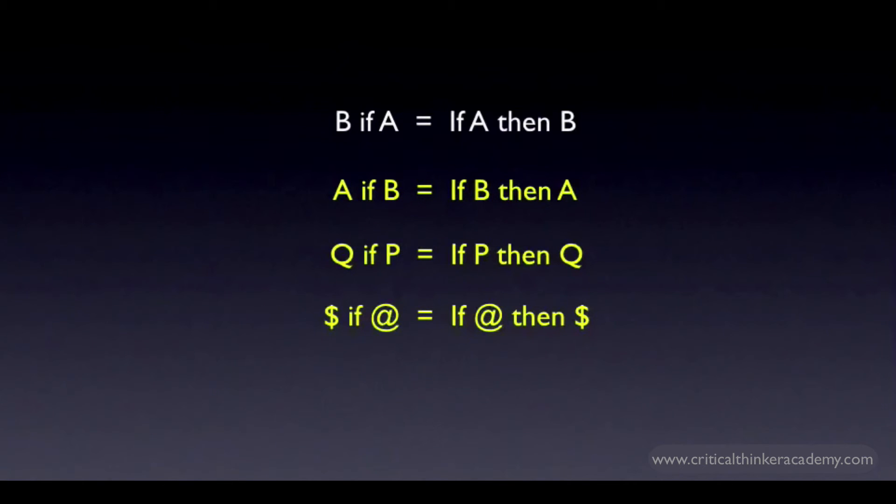What matters is that in standard form, whatever follows the if is the antecedent. The trick in interpreting different versions of the conditional is to identify the claim that is functioning as the antecedent, so that you can then rewrite the conditional in standard form. This is actually a very useful skill when analyzing ordinary arguments. We'll eventually cover the valid and invalid argument forms that use the conditional, and these are always expressed using the conditional in standard form. So in order to apply your knowledge of valid and invalid argument forms, you need to be able to translate conditionals into standard form.